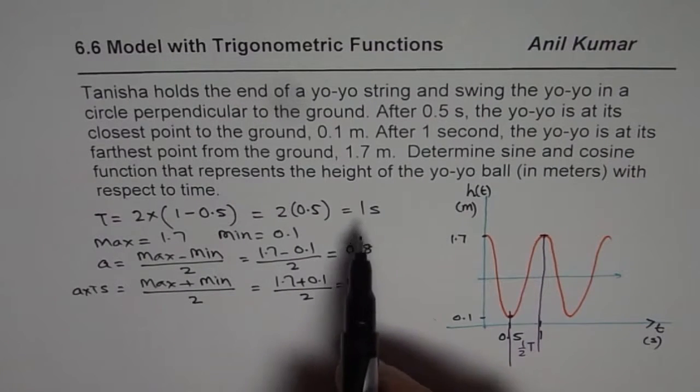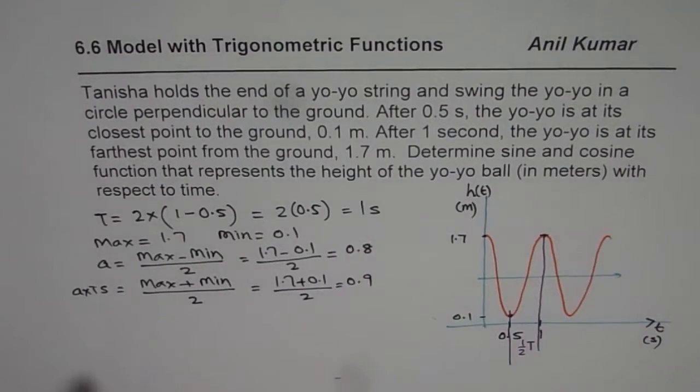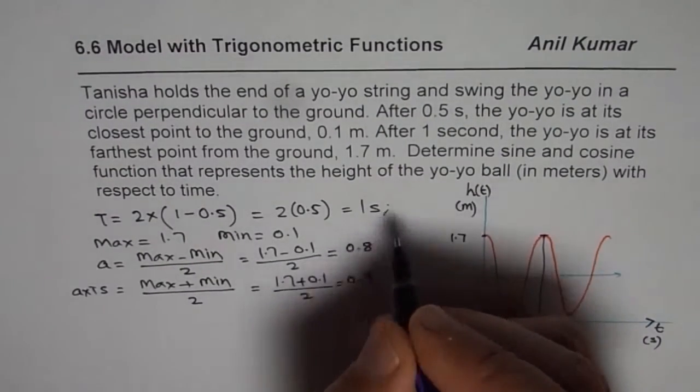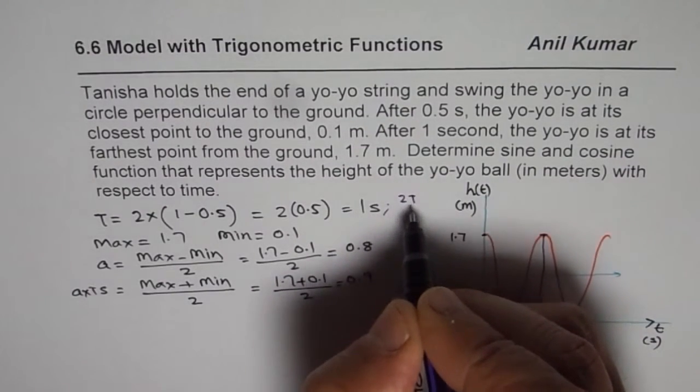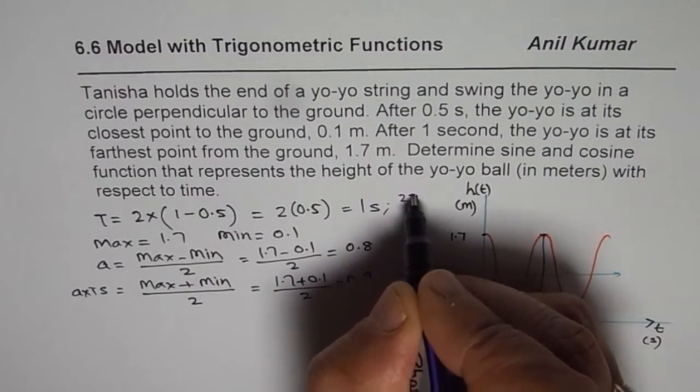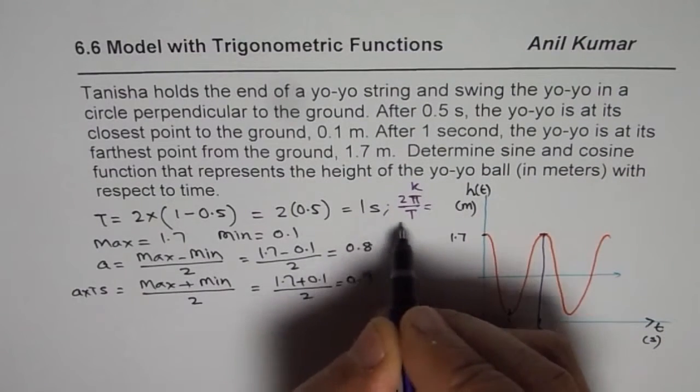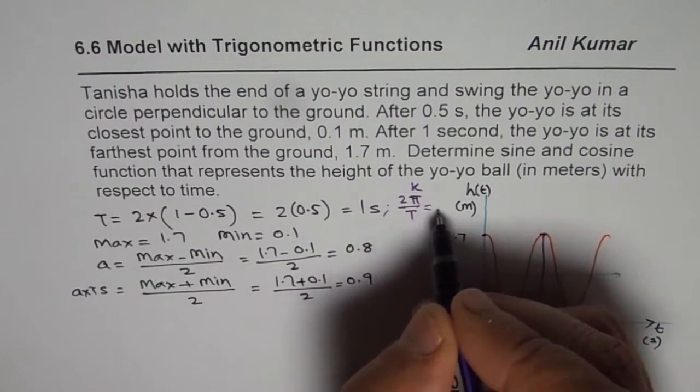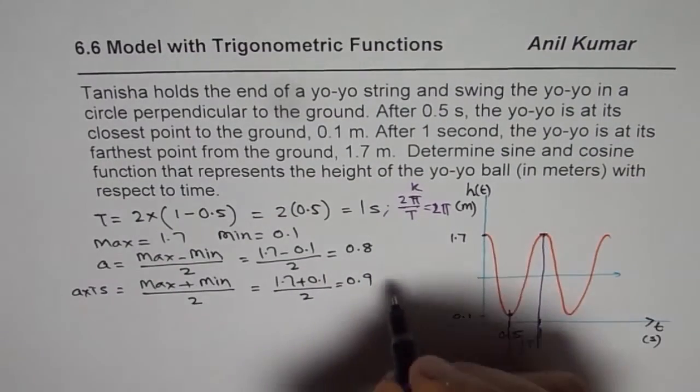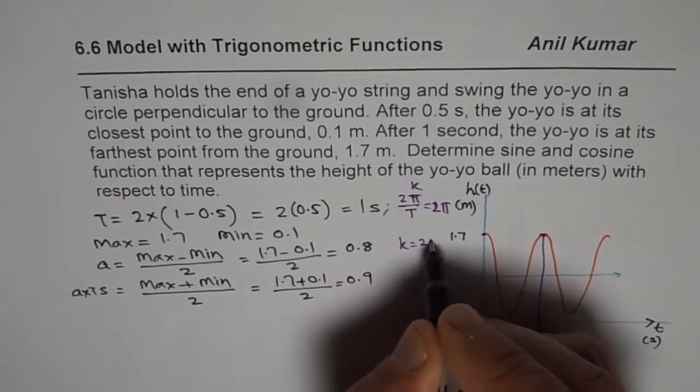Now since we know time is one second, we can find the value of k. So k will be 2π by T. Since T is one second, k is 2π. So we have k as equals to 2π.